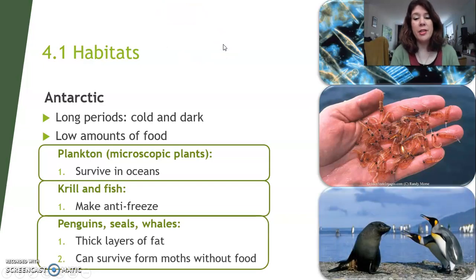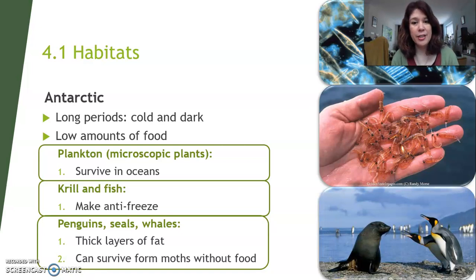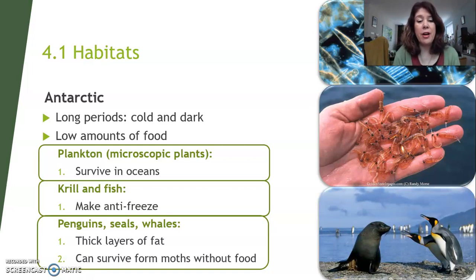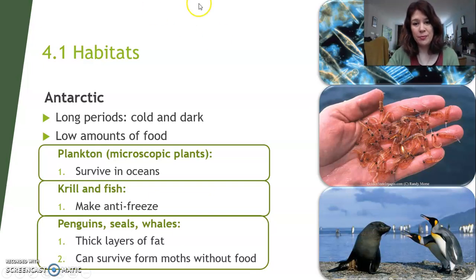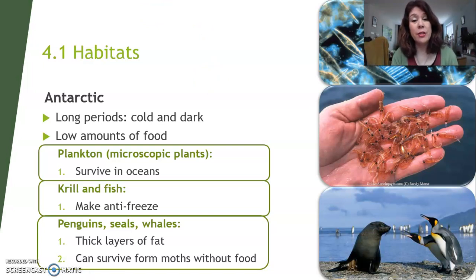Penguins, seals, and whales in the Antarctic have thick layers of fat that keep them warm. They can also survive for months without food because of that fat — just like the camel stores fat for energy.